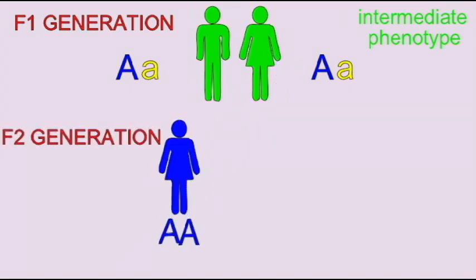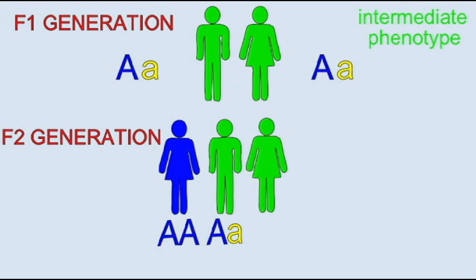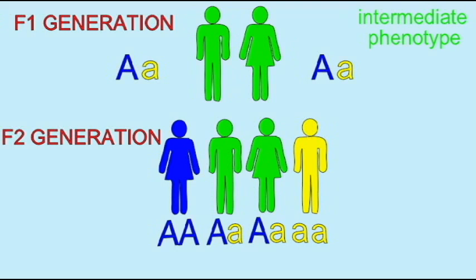Each of these individuals produces two types of gametes, one with the dominant allele and one with the recessive allele. Therefore, one quarter of the offspring are homozygous for one trait and have one of the homozygous phenotypes. One quarter of the offspring are homozygous for the other allele and have that phenotype. Half of the offspring are heterozygotes and have the intermediate condition.